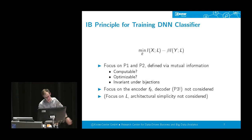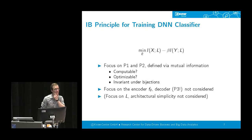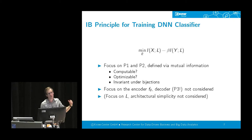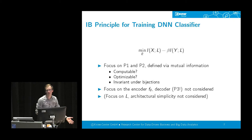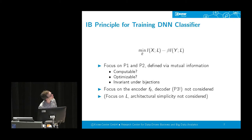As a side note, the information bottleneck functional is a regularizer for the representation, not for the network parameters as in weight decay. So you cannot expect to get sparse weight matrices. Let's go through these three issues in detail.